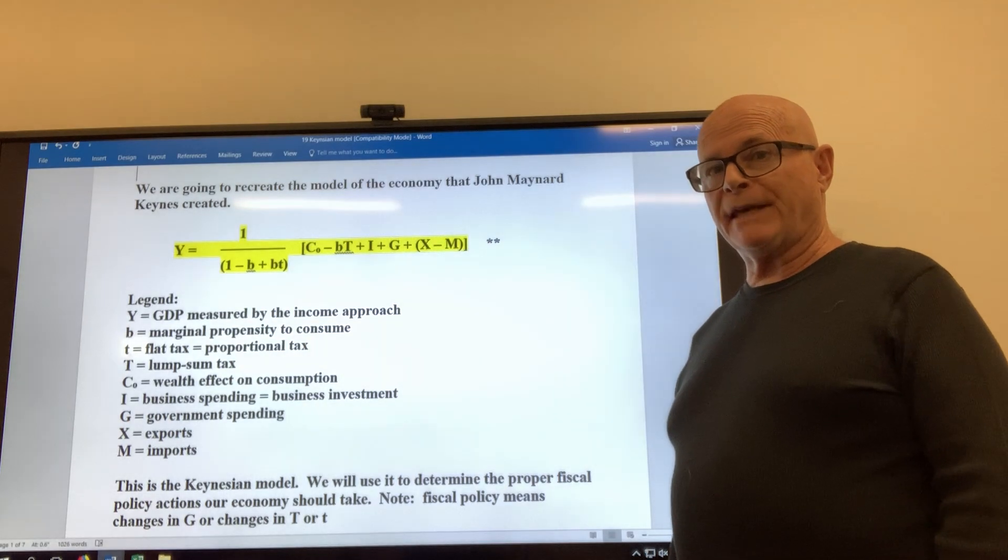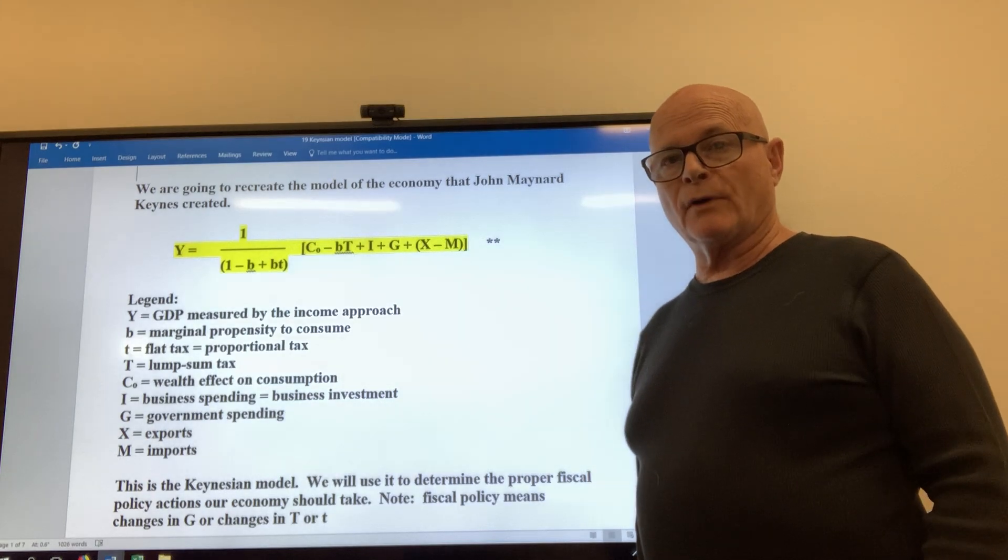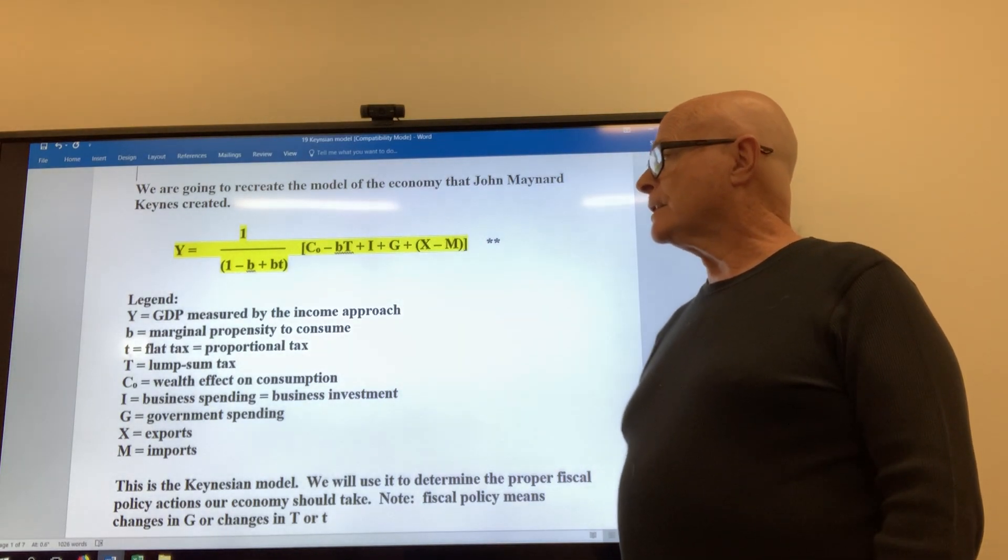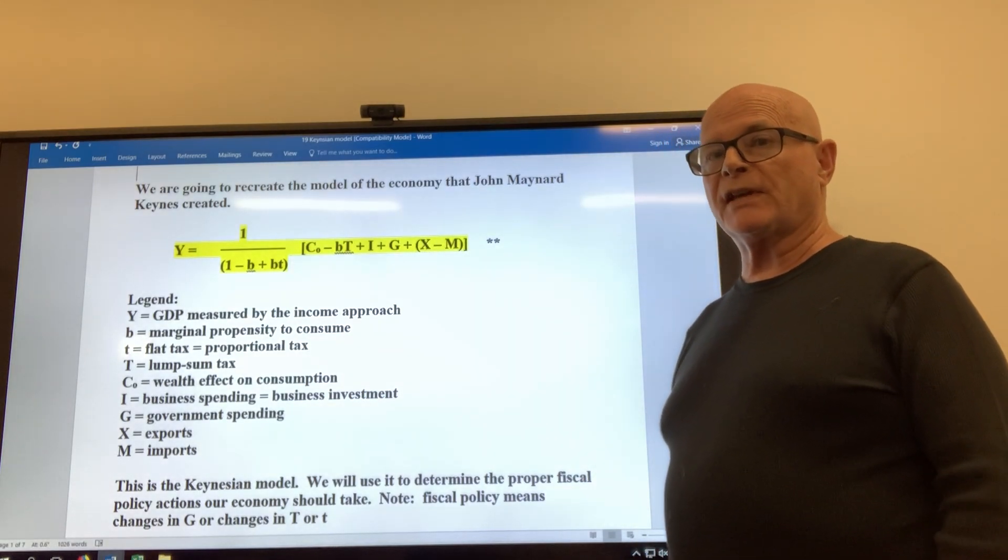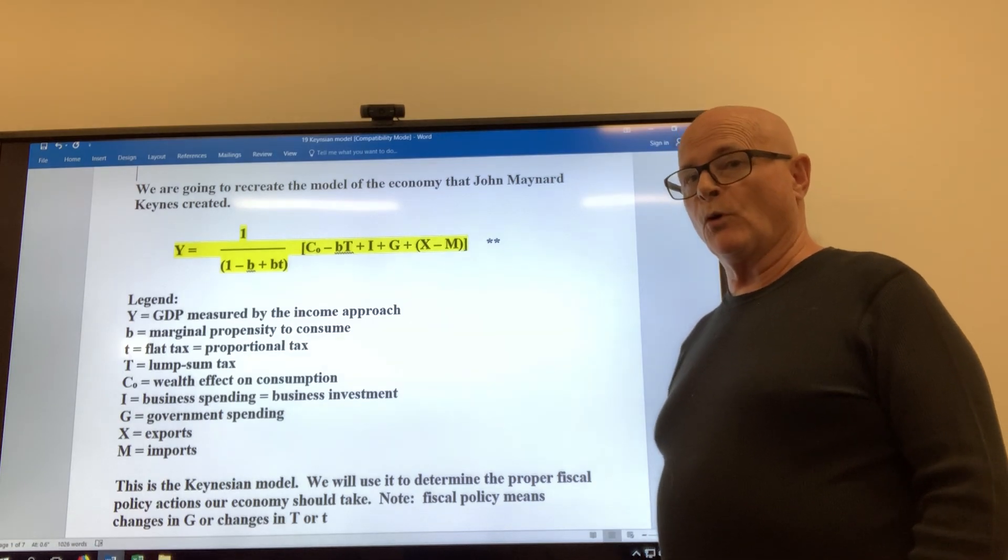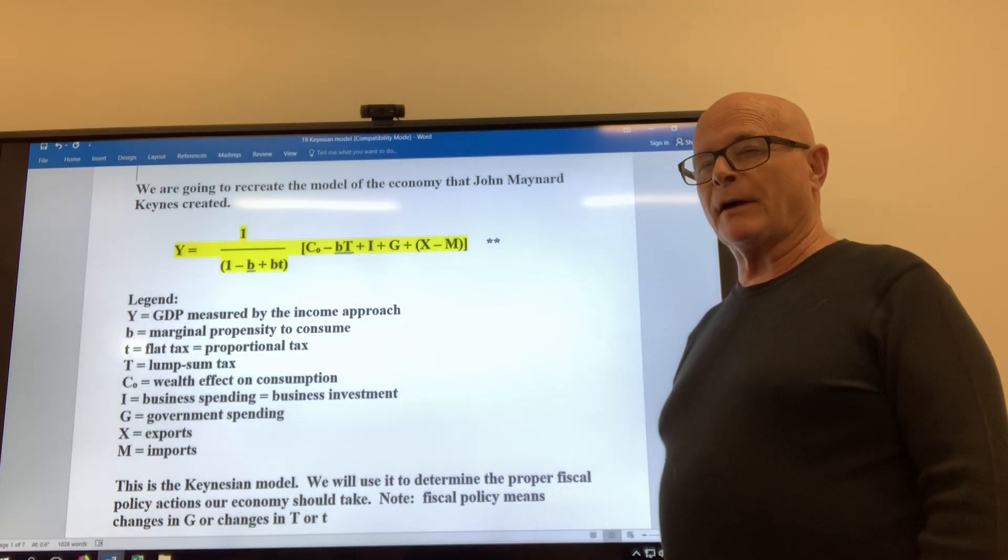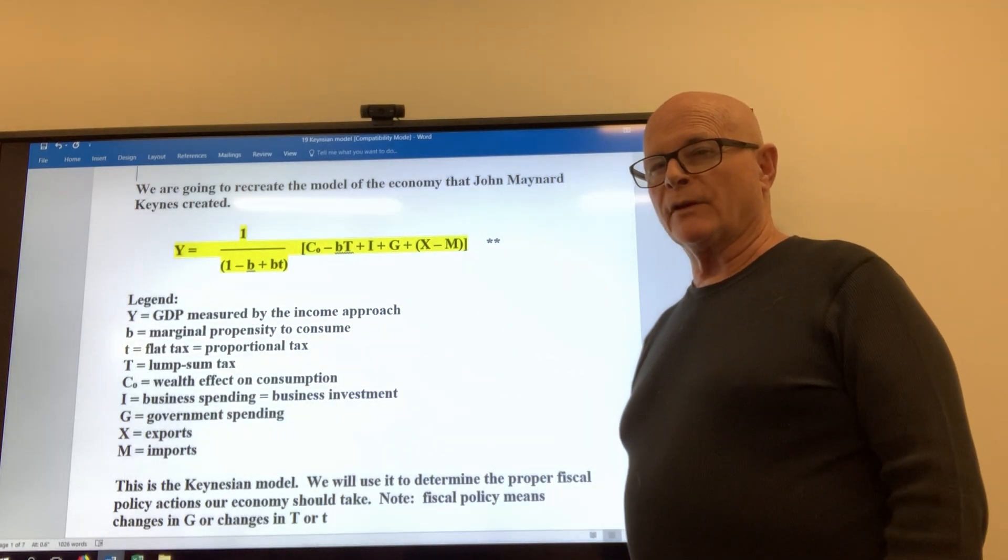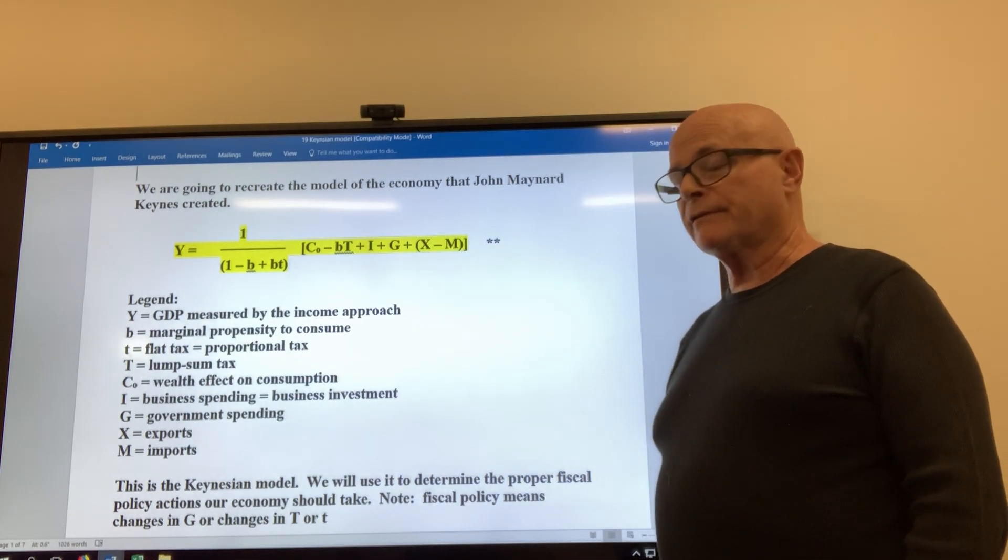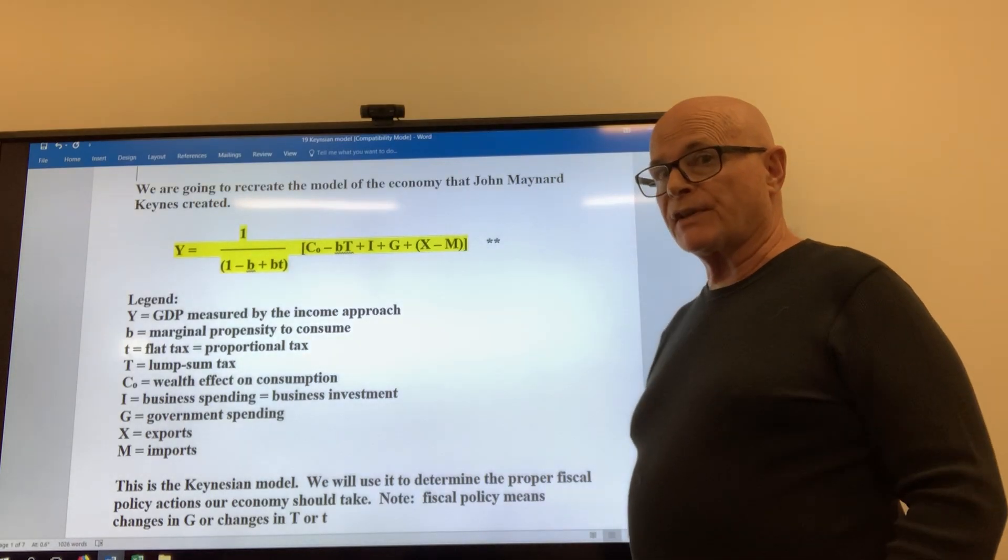It means that everybody pays the same percentage of their income. This was debated in the Reagan administration for a while, didn't get through Congress, but they came up with about 20 percent being the amount that if you taxed everybody rich, poor, and everyone in between 20 percent, you'd get about the same amount of revenue that you were getting with the current income tax system which was a progressive system. That would be the same percentage for everybody.